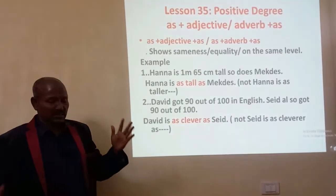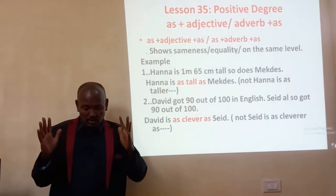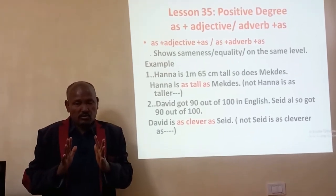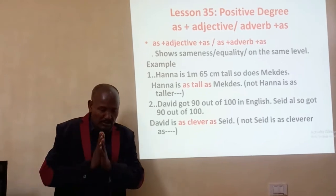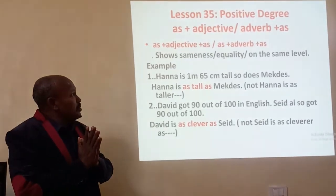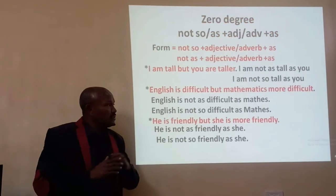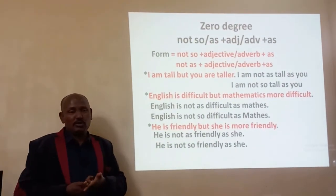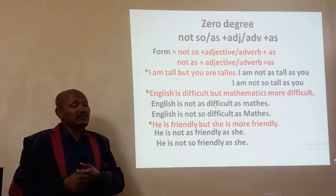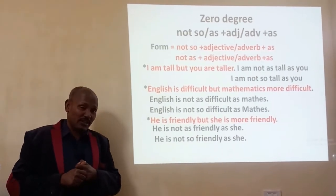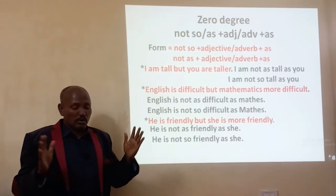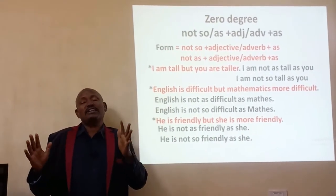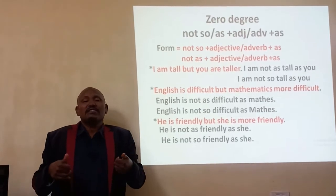We can conclude that positive degree shows two people or two things which are found equal. The other one is zero comparative or zero degree, which is different from positive degree. In zero degree, both two things are not found at the same level — two things are found at a different level.